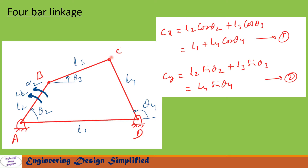Let us write the displacement equation for point C in the x-direction. So in the x-direction: CX = L2·cosθ2 (this length) + L3·cosθ3 (this length) = L1 + L4·cosθ4 (this length). I have taken a positive sign because in the second quadrant cosθ4 is going to be negative. Let us call this Equation 1.